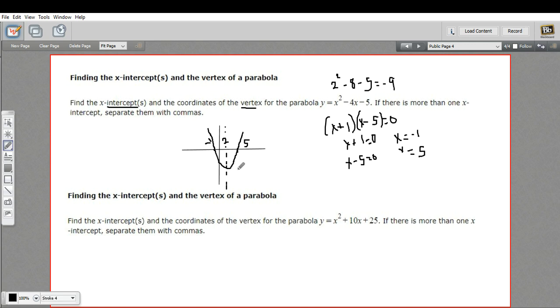So my y-coordinate is negative 9. My x-coordinate is 2. So the vertex is here at 2, negative 9. And my x-intercepts were negative 1 and 5.